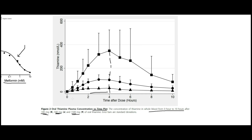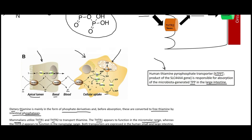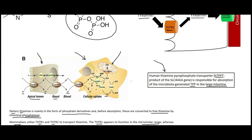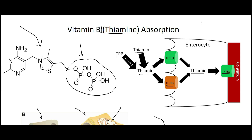That covers everything I could find about thiamine absorption — there was surprisingly little about it. The key take-home message is that thiamine is dephosphorylated into free thiamine, taken up by THTR1 and THTR2 into the enterocyte, and then transported through THTR1 into the blood to be distributed to the rest of the body. I hope you found this video interesting and I'll see you in the next one.